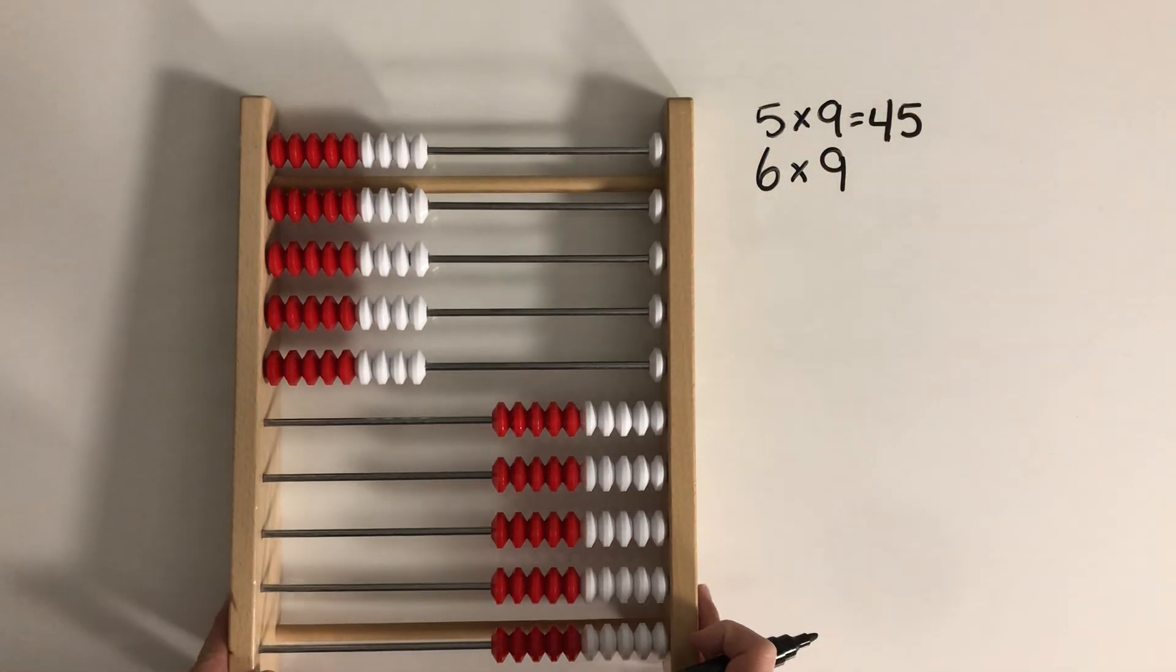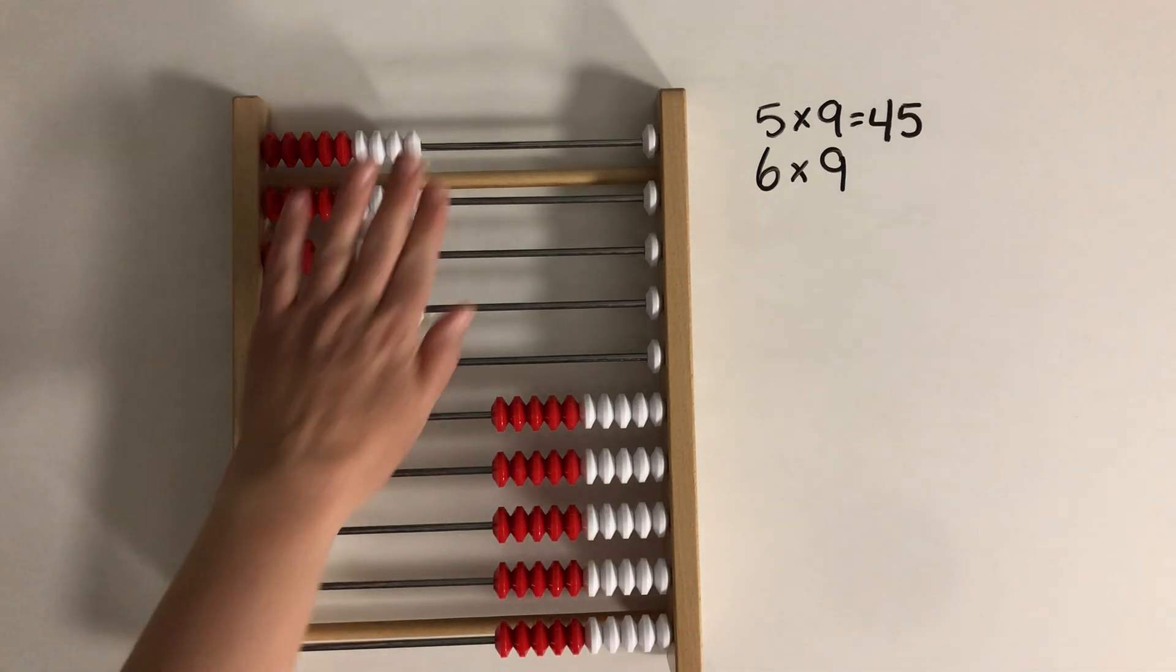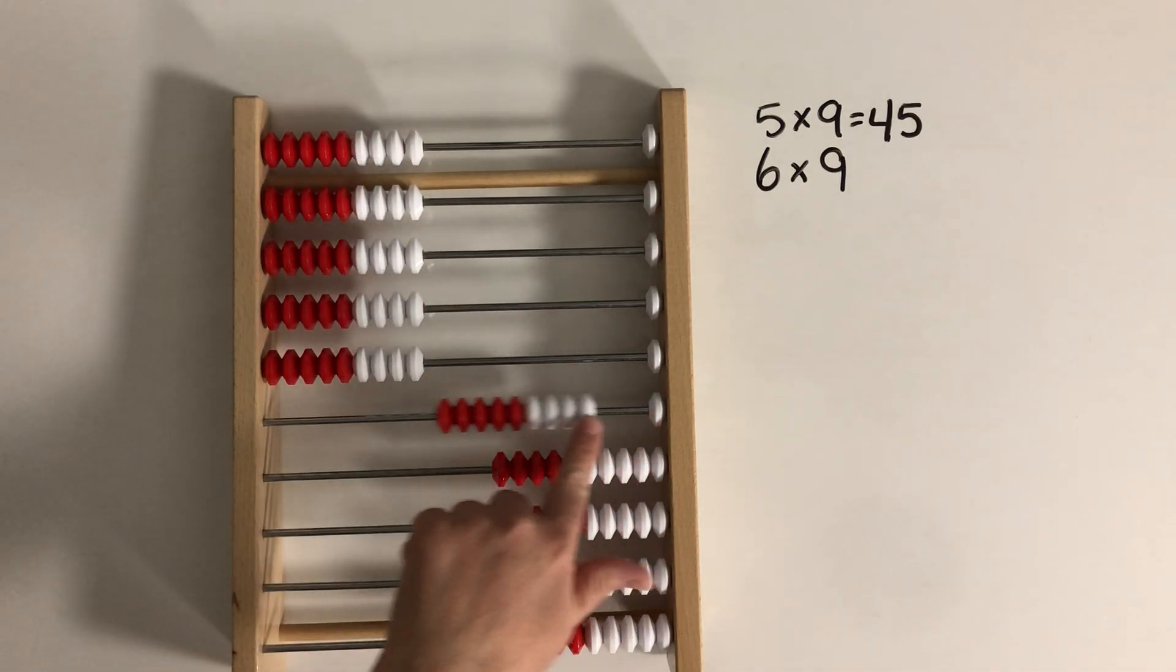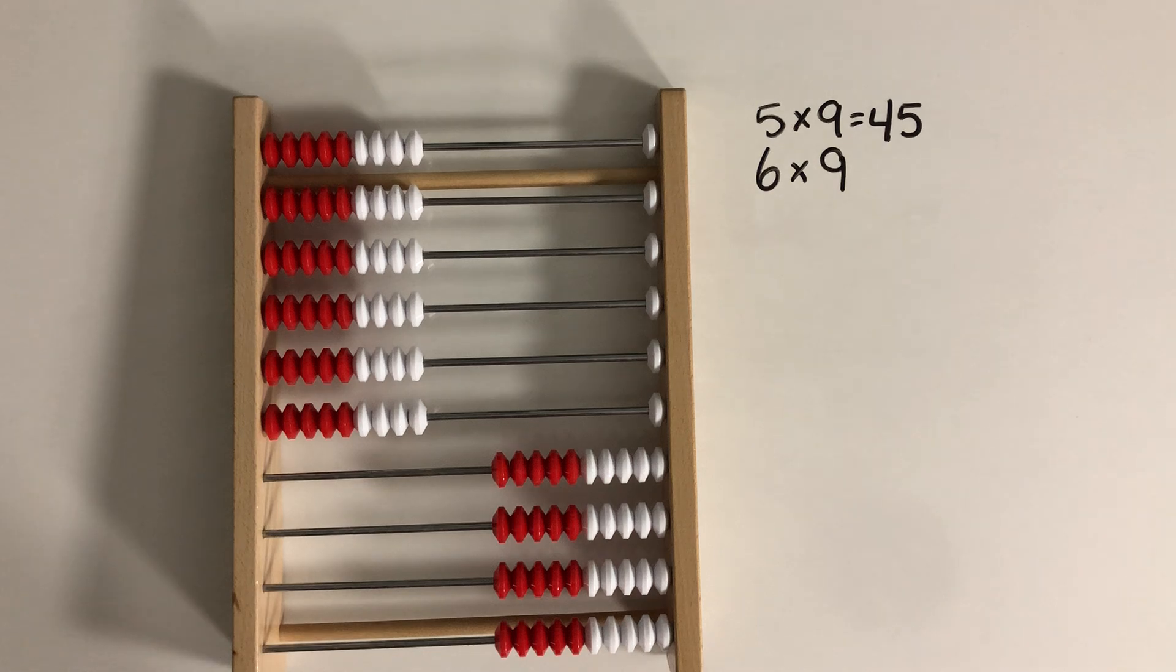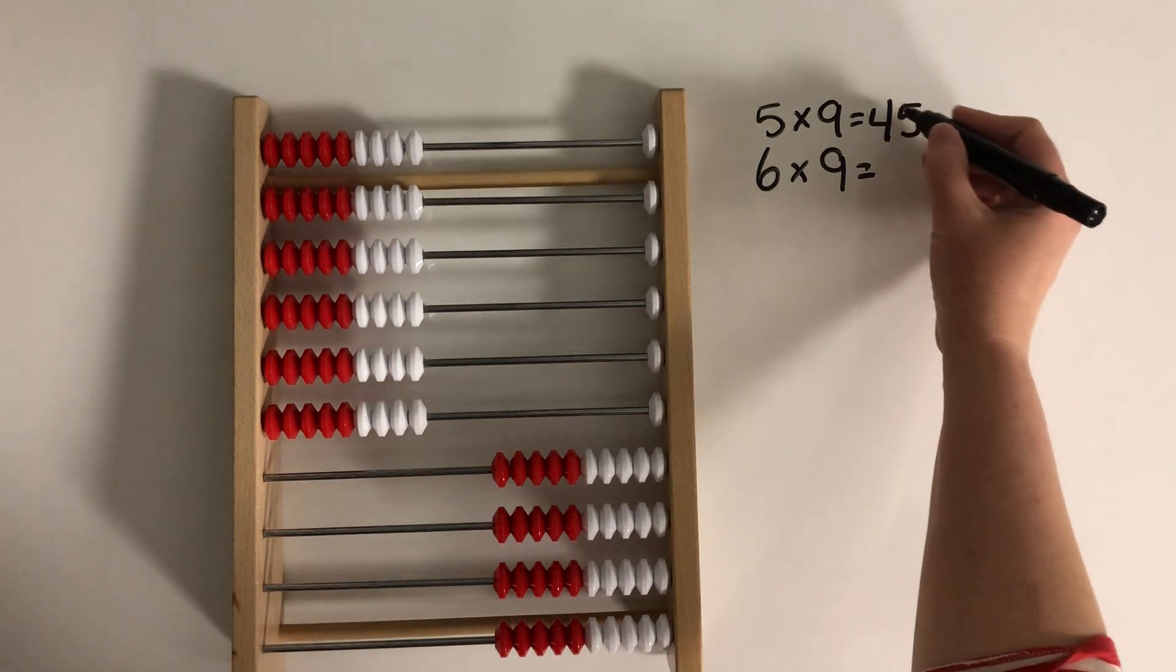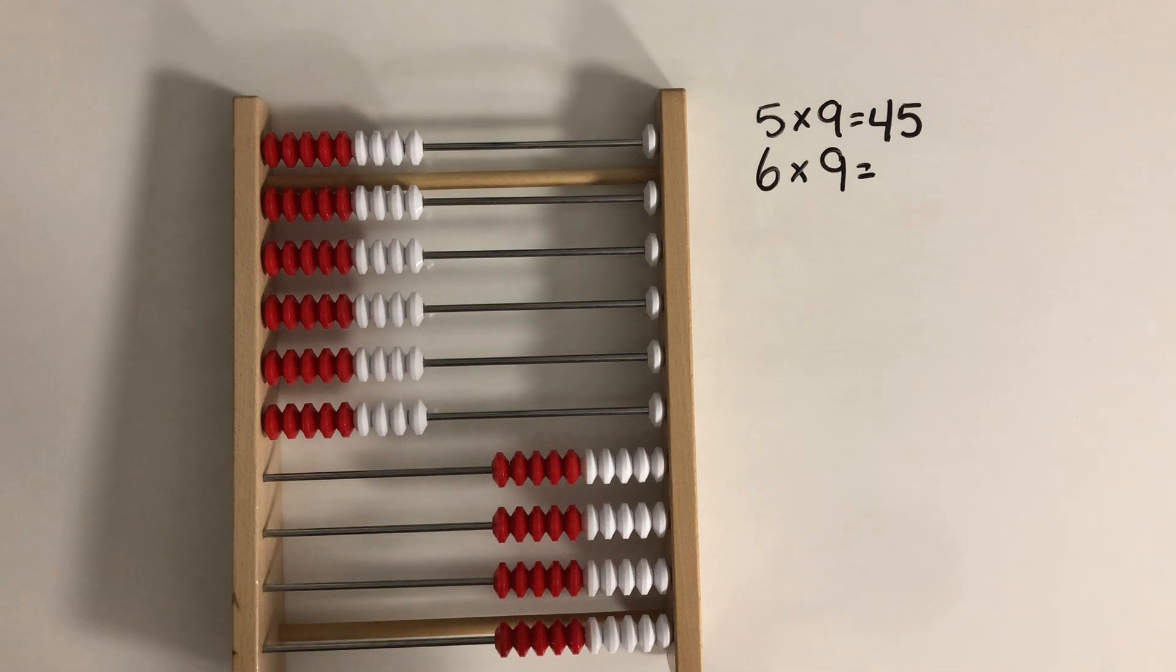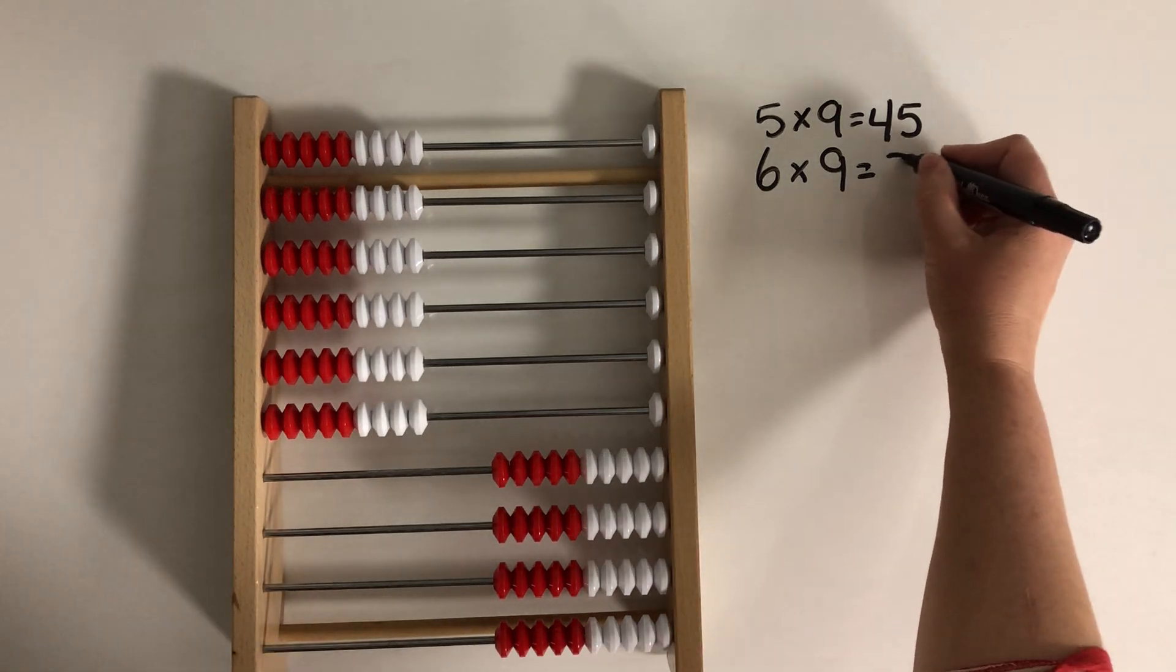So then what are we going to do to make 6 groups of 9? We could just add 1 more group of 9. And so that is going to be 9 more than 45. So 6 times 9 will be 54.